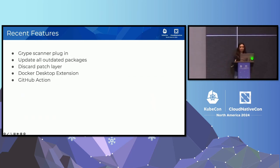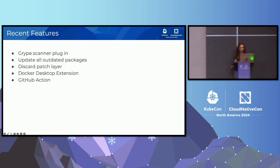Some of the recent features that we've added with Copa include first the Grype scanner plugin, which was an open source contribution. This allows us to use Grype reports along with Copa to figure out the packages that need to be updated. And because different scanners show different vulnerabilities sometimes, we wanted a way to update all outdated packages. So Copa will go in and figure out what required updates are needed and updates all of those packages.